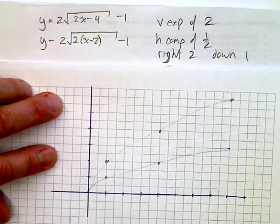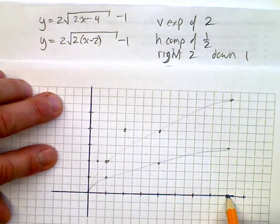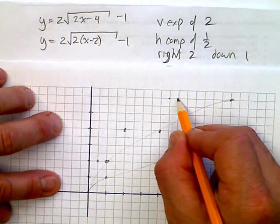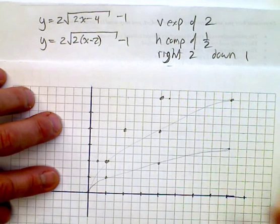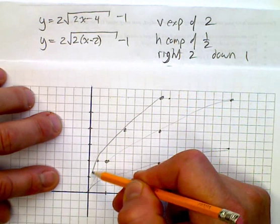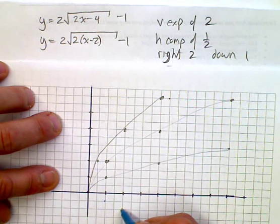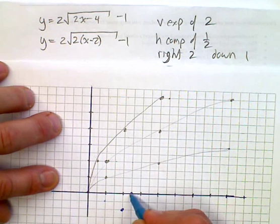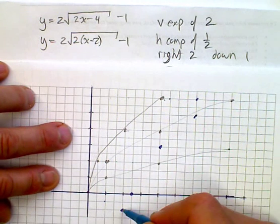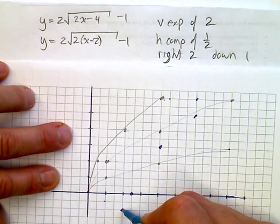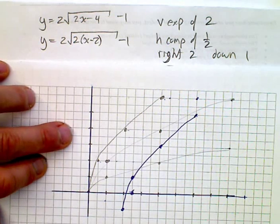Now the horizontal compression of one half moves the x-values inward: so x = 4 becomes x = 2, and x = 16 becomes x = 8 — the x-coordinates are halved. Then finally you go right 2 and down 1 for each point: right 2 and down 1 applied to all points gives your final translated graph.